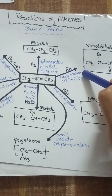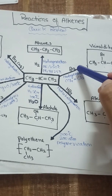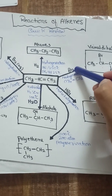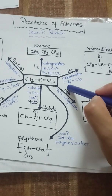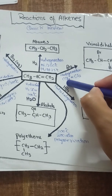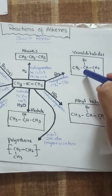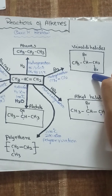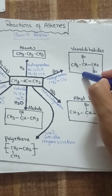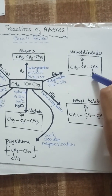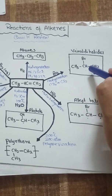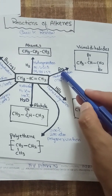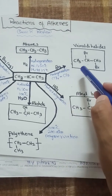The second reaction is halogenation — the addition of halogens like chlorine, bromine, iodine, or fluorine. Here we take the example of bromine. Bromine in the presence of an inert solvent like carbon tetrachloride or carbon disulfide produces vicinal dihalides. The product is 1,2-dibromopropane, where the two halogen groups are present on adjacent carbons. This bromine water test is used to determine unsaturation in hydrocarbons.